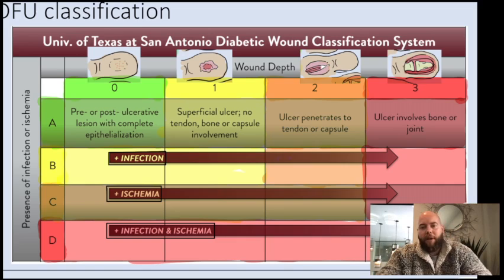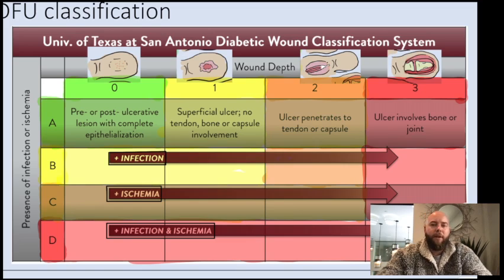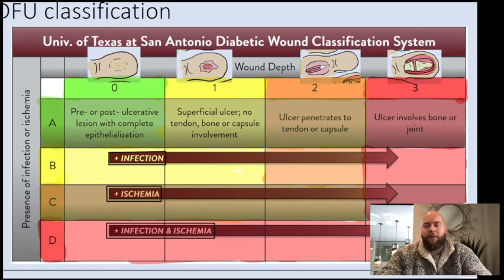It begins with zero, but that makes sense because zero here is not technically an ulcer. It's pre- or post-ulcerative, so it's completely epithelialized — it's not through the superficial layers of skin. A one is then deep to the skin, so a superficial ulcer.